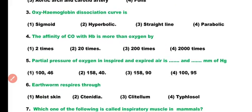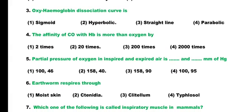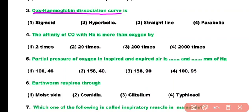Question number 3. The oxy-hemoglobin dissociation curve is: sigmoid, hyperbolic, straight line, or parabolic. Correct answer is option 1. The oxy-hemoglobin dissociation curve is sigmoidal type.